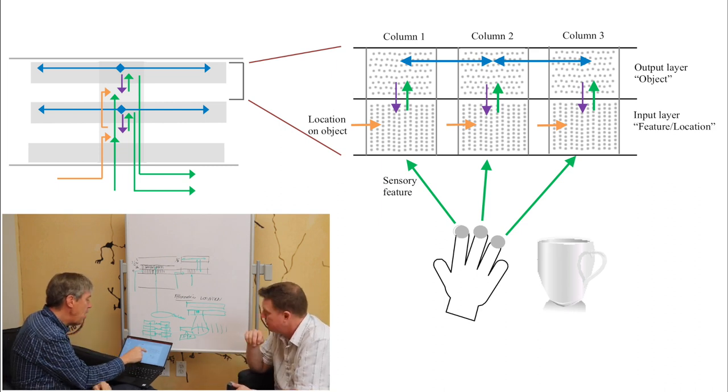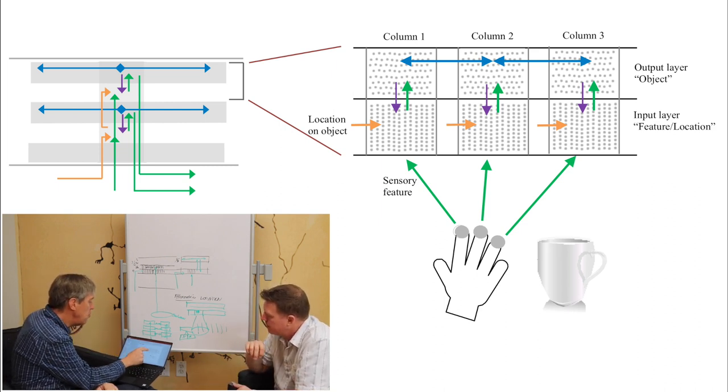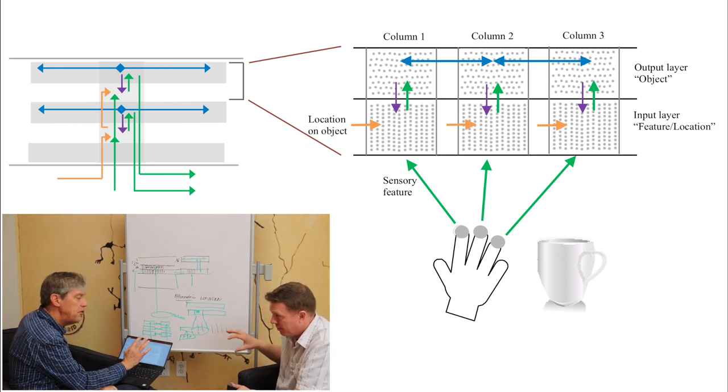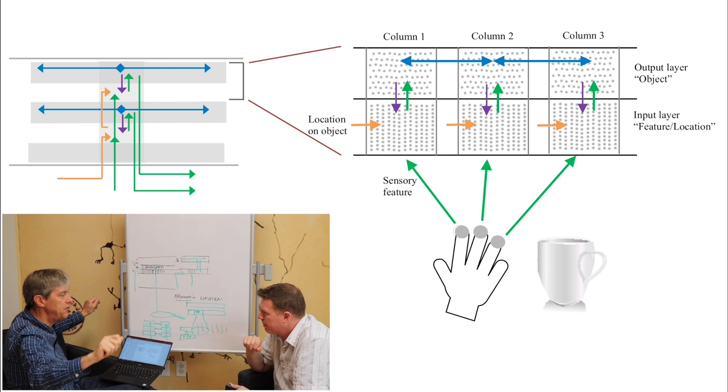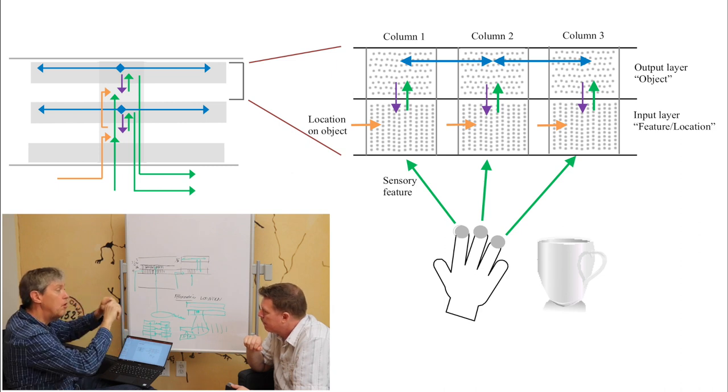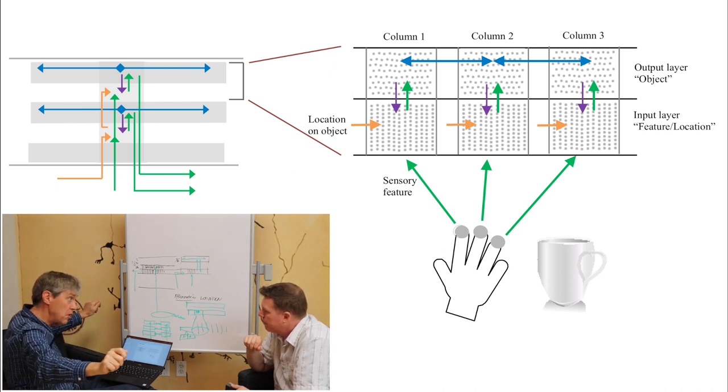But now what we're saying is we have a two-layer model for one finger, two-layer model for another finger, two-layer model for the other finger. Different columns. Each one is one column. And the important thing is that they communicate in the output layer. The output layer has these long distance connections. So layer two and three have these long distance connections that go across columns.